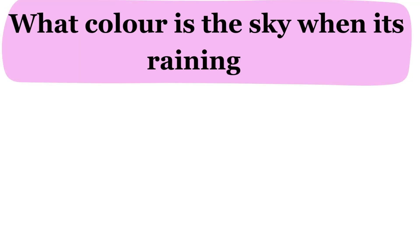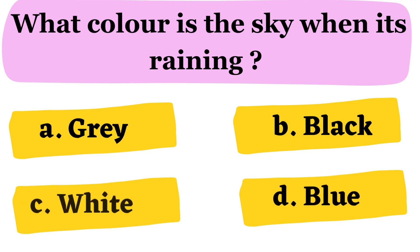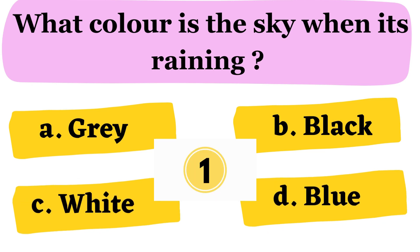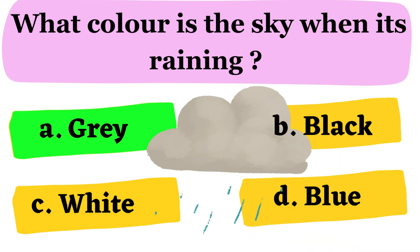Next question. What color is the sky when it's raining? A. Gray B. Black C. White D. Blue. The correct answer is option A. Gray.